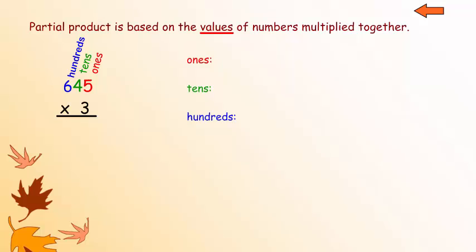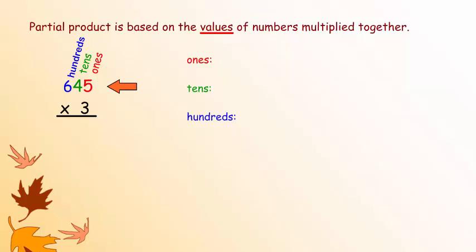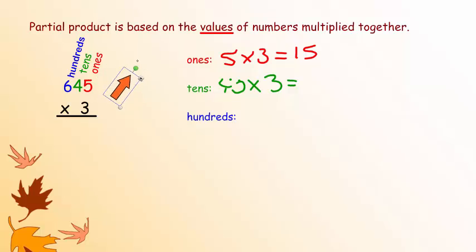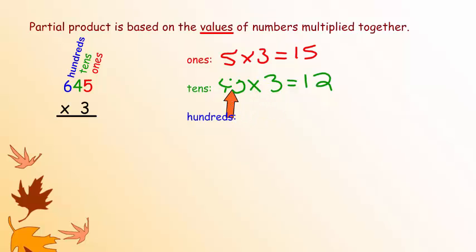Let's take a look and see what you did. The first thing we're going to do is the ones place — you always start with the ones place, then move to the tens, and then the hundreds. In the ones place we have 5 times 3. Since the 5 is in the ones place, its value is 5. So we write 5 times 3 equals 15. Next, the tens place — there is a 4 in the tens place, so its value is 40. Multiply 40 times 3: use the trick, 4 times 3 is 12, tack on the 0, so 40 times 3 is 120.